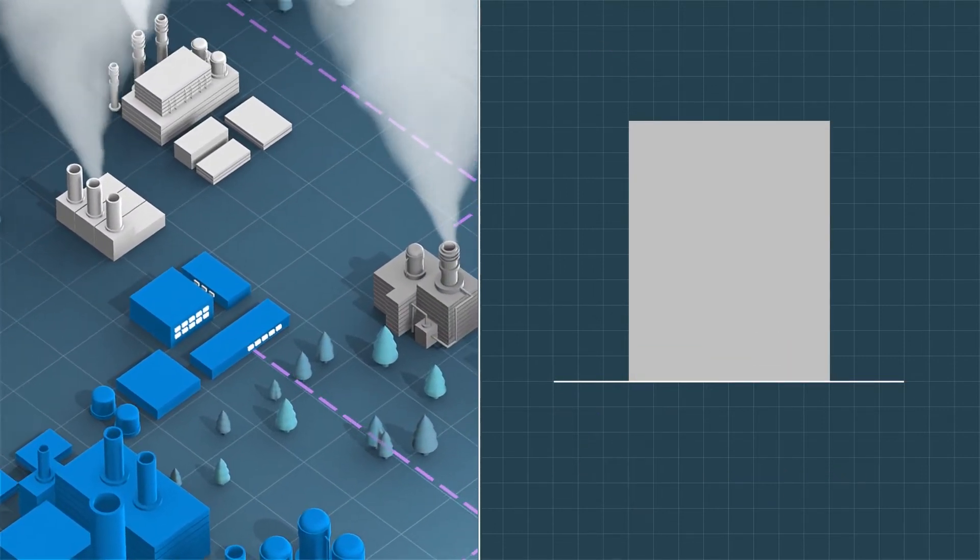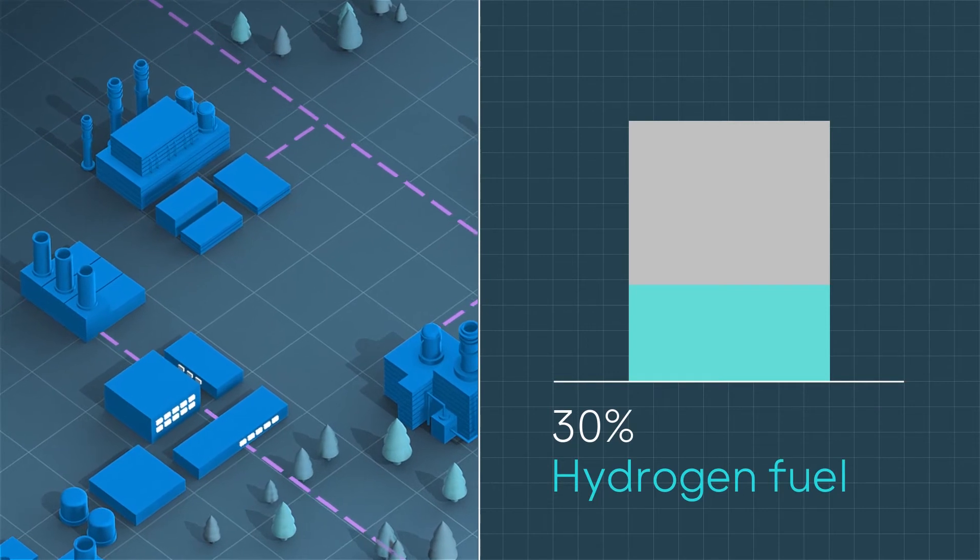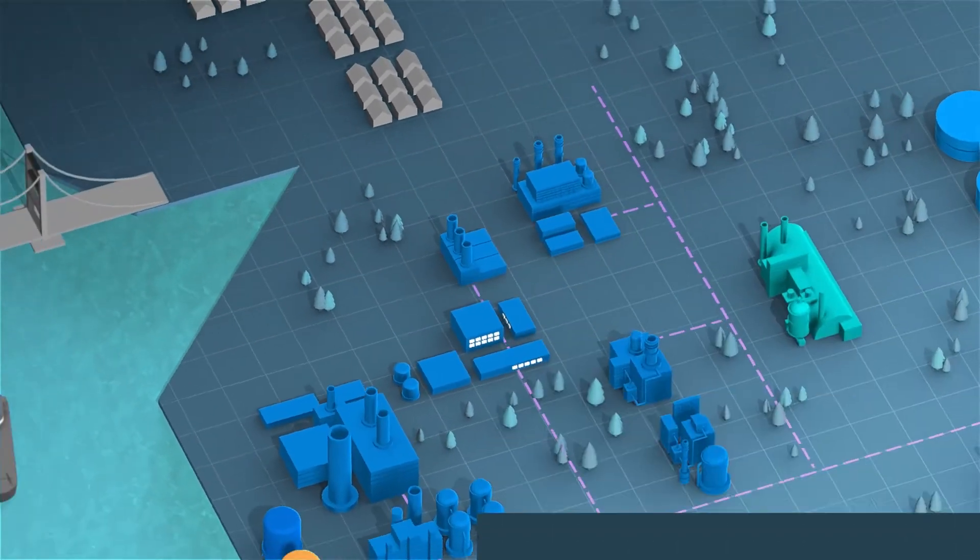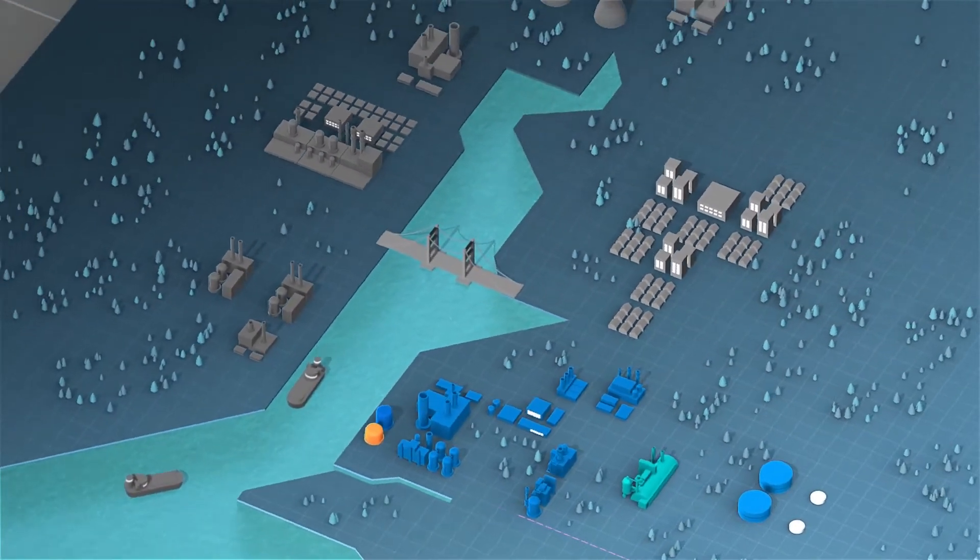CO2 emissions at Saltend will fall by 900,000 tonnes per year from the first phase of this project, as industrial plants switch their fuel to low carbon hydrogen and the power station moves to a 30% hydrogen fuel blend.